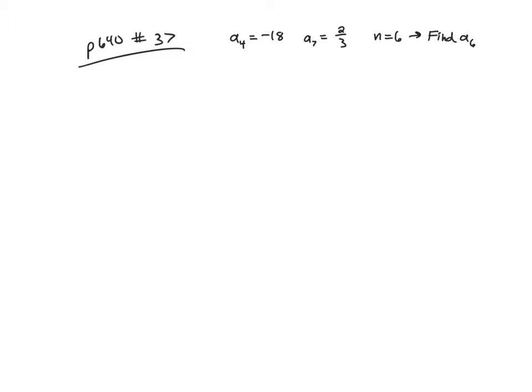So just to put it into visual context, 1, 2, 3, 4, here's a sub 4, and that's negative 18. 5, 6, 7, this is a sub 7, which is two-thirds, and we are supposed to find this term right here, a sub 6.